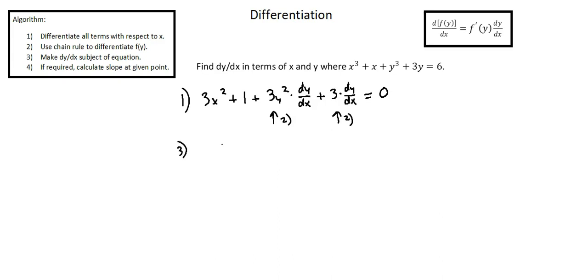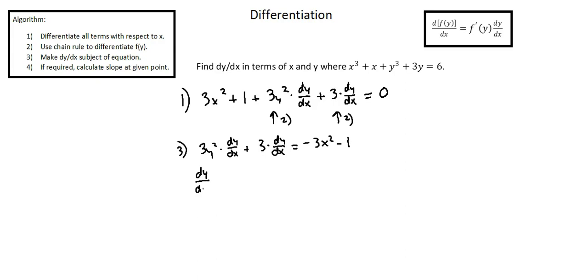Moving on to step 3: make dy over dx the subject of the equation. We keep the dy over dx terms on one side and move all other terms to the other side. So we keep 3y squared times dy over dx plus 3 times dy over dx on the left, and move 3x squared and plus 1 to the right, where they become negative 3x squared minus 1. Continuing to simplify, we factor dy over dx out of the two terms on the left, leaving dy over dx times the quantity 3y squared plus 3, and the right side remains negative 3x squared minus 1.